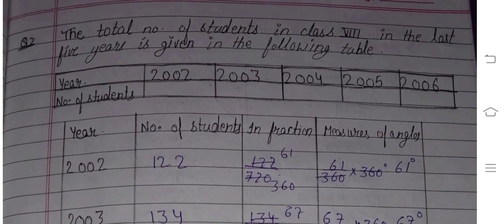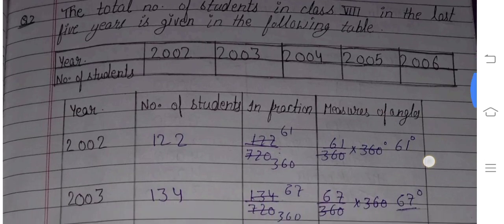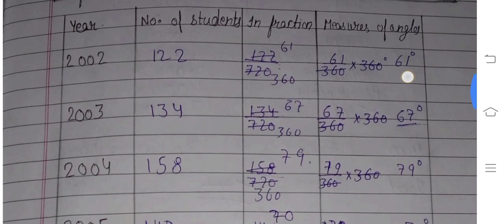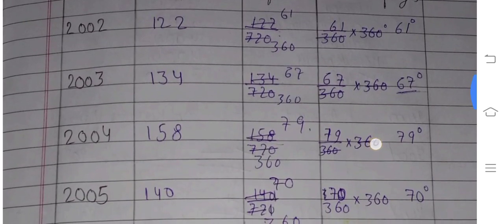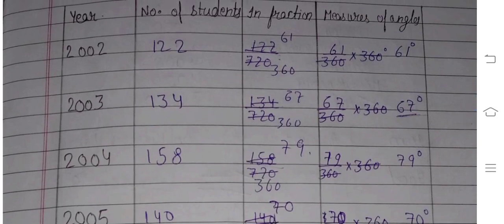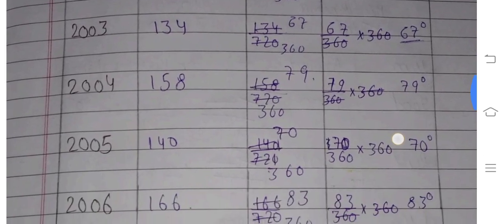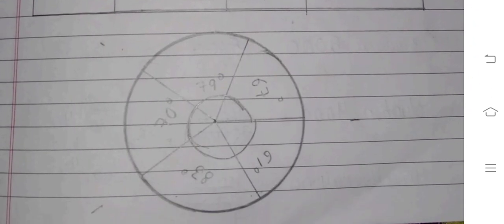The total number of students in class 8 in the list of 5 years in the given following tables. You have following tables given and number of students. So in question you have two things given: fraction and measure angle. The fraction is 721 by one divided by 360, multiply in angles. The sum of angles is 360 degrees. With help of this, we will make a pie chart using a protractor.